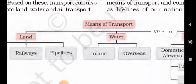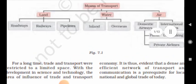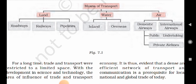Here, we can observe some means of transport. They are separately available on the earth: land, water, air. These three means of transport are seen in the world. Land is connected to roadways, railways, and pipelines. Water includes inland and overseas. Air includes domestic airways, international airways, public undertaking, and private airlines.